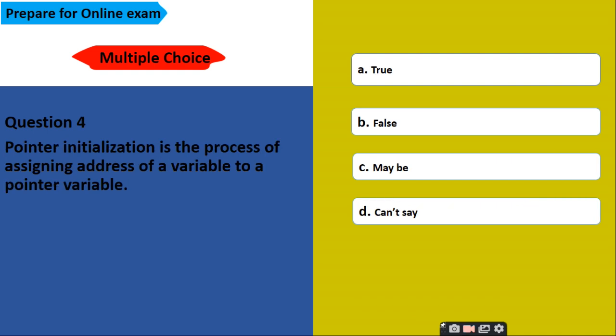Pointer initialization is the process of assigning address of a variable to a pointer variable. Options are true, false, maybe, can't say. And correct answer is A, true. Pointer initialization is the process of assigning address of a variable to a pointer variable.